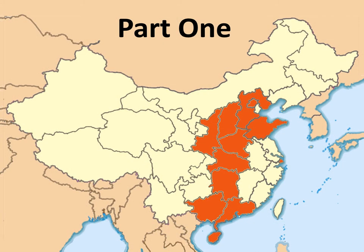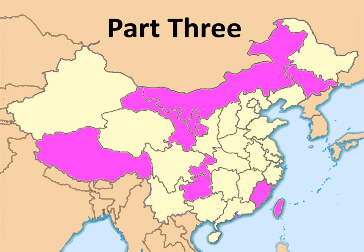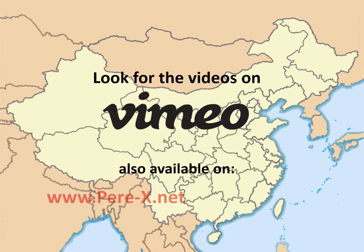Part 1 teaches 12 administrative areas in the heartland of China whose names include compass points. Part 2 continues with 11 more areas — many of these include geographic features in their names. Part 3 completes the series with the remaining 11 areas. Tune in. I hope you will enjoy.